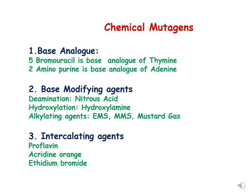The second category is base modifying agents. These chemicals modify the bases and cause three kinds of reactions. First is deamination, in which they remove an amino group — the example is nitrous acid. Second is hydroxylation, where they add a hydroxyl group to the base — the example is hydroxylamine. The third kind is alkylating agents, which add an alkyl group to the base, modifying it. Examples are EMS, MMS (methylmethane sulfonate), and mustard gas.